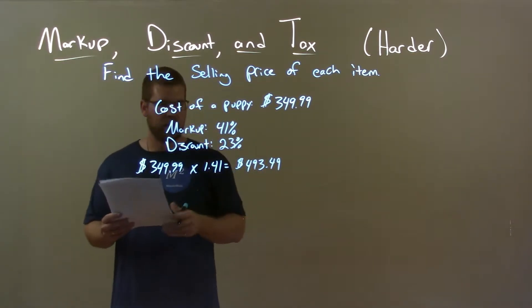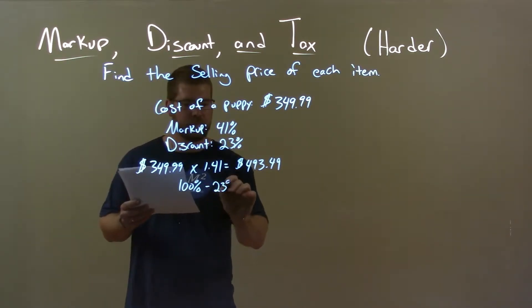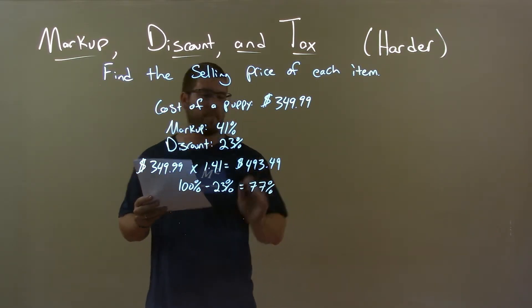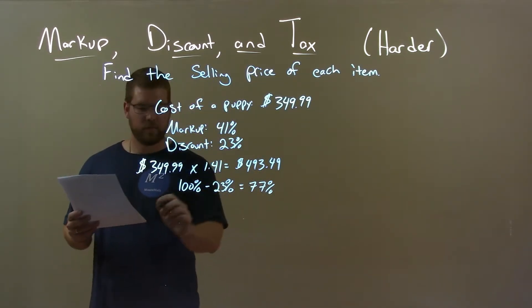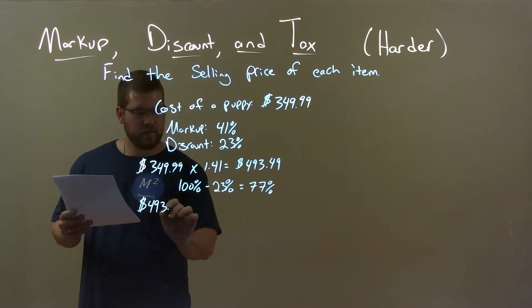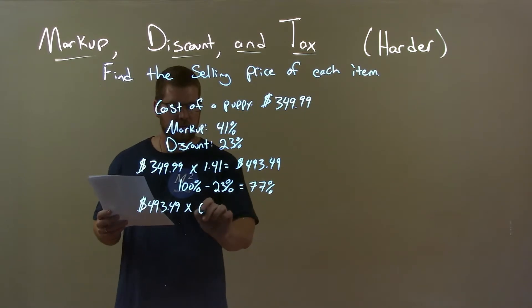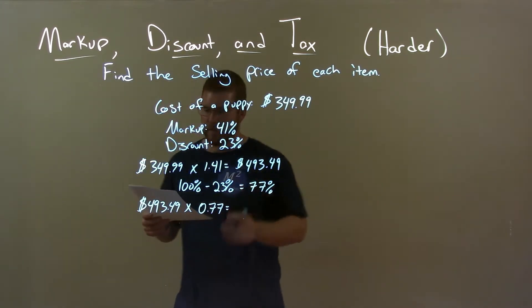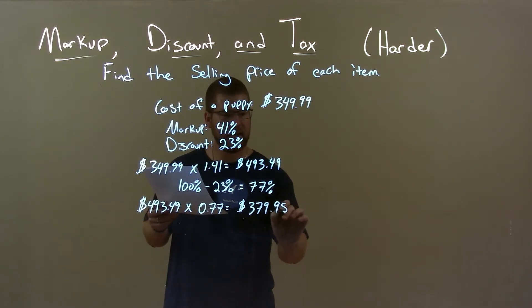Now, to calculate the discount, we take 100% and subtract the discount of 23%. That gives us 77% of that price that we're going to pay. So, we take the $493.49 and multiply that by 77% as a decimal, 0.77. This gives us a final answer of $379.98.